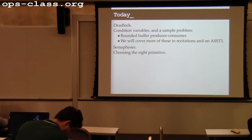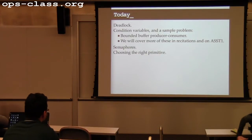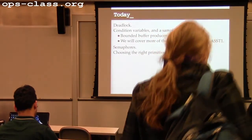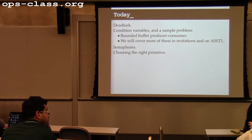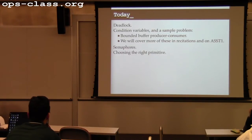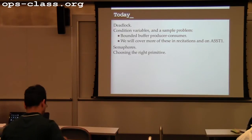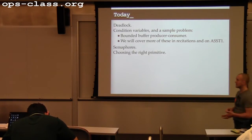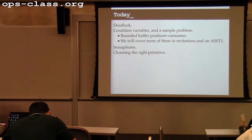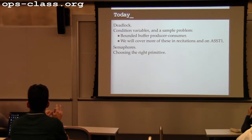Today we're going to talk a little bit about one of the problems you can run into using locks, which is deadlock. Then we're going to walk through two other synchronization primitives. We'll look at each primitive and then do an example. We're going to look at condition variables, which are quite useful and which you'll want to use for assignment 2 and probably assignment 3. Then we'll talk about semaphores, which are probably the least useful primitive of the ones implemented on your system. We'll also cover general advice about how to choose the right primitive for the problem you're trying to solve.